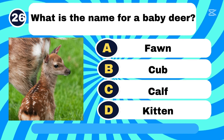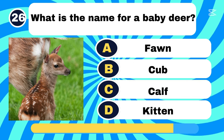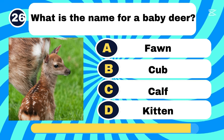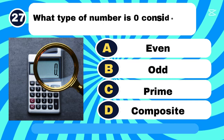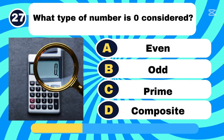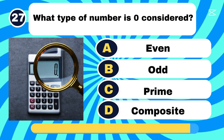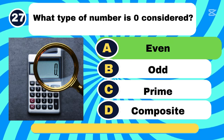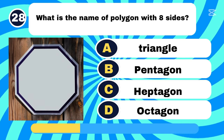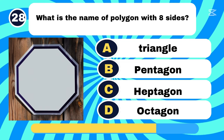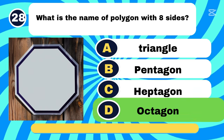What is the name of a baby deer? Letter A, Fawn. What type of number is zero considered? Letter A, Even. What is the name of a polygon with eight sides? Letter D, Octagon.